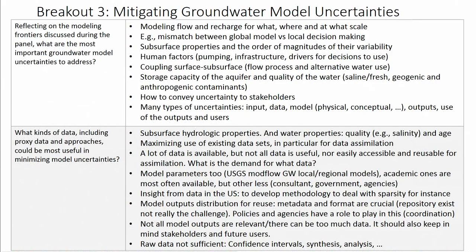Maybe we should ask ourselves, as we publish new data sets, what is the demand for that data and who is going to use it? We talked about model parameters — there's a tendency to publish these mostly from the academic sector, but many models developed by consultants and government agencies could also be useful. We also discussed the wealth of US data that could be exploited to develop methodologies dealing with data sparsity in other regions of the world. On model outputs, distributing them for reuse is important, but hosting these outputs in repositories can be a challenge.